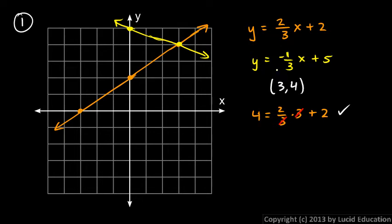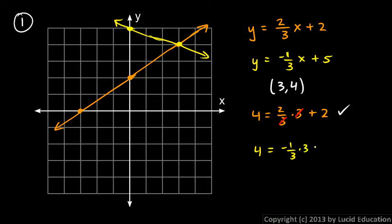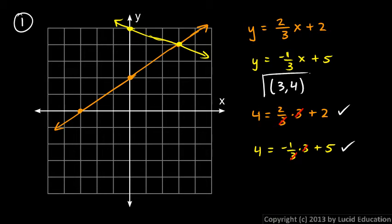And then the other one: y equals negative one-third x plus five. Put in three for x and four for y. So that gives me four equals negative one-third times three plus five. You can see the threes cancel out, and we're left with four is negative one plus five, and that's correct also. So this is the solution: three comma four. That point right there is the solution to this system.